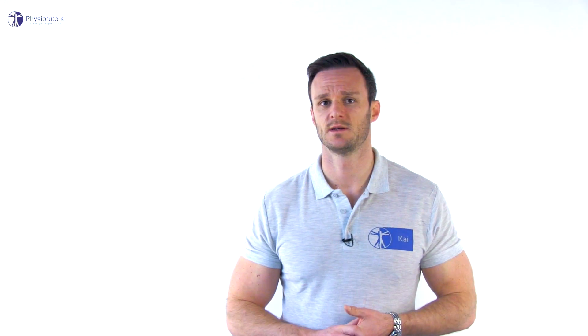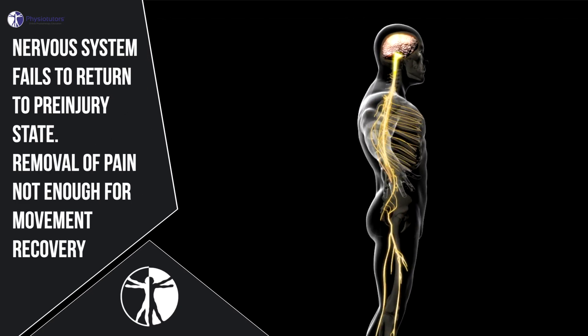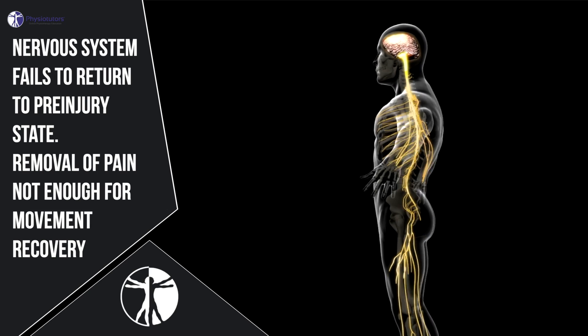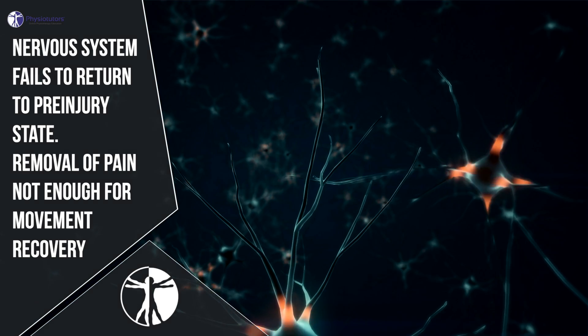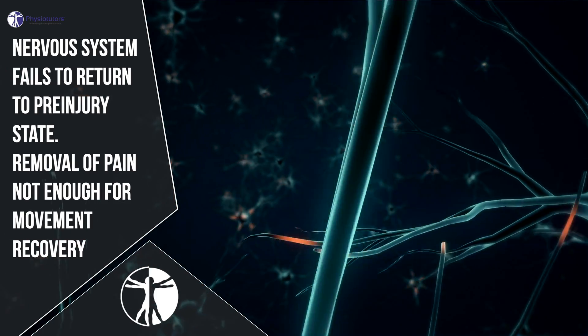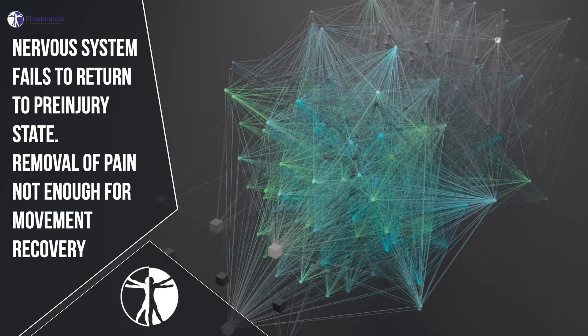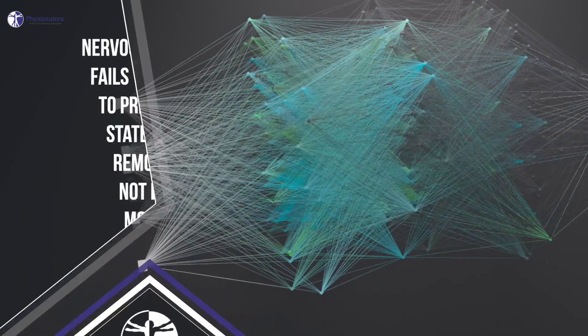There are several possibilities why this is the case. The nervous system may fail to return to its pre-injury state, as removal of pain might not be enough for movement recovery. Although the nervous system has a refined capacity to respond and adapt to immediate feedback such as pain provocation, there is limited potential to predict and adjust to long-term outcomes such as the potential consequences of maintenance of a sub-optimal strategy.